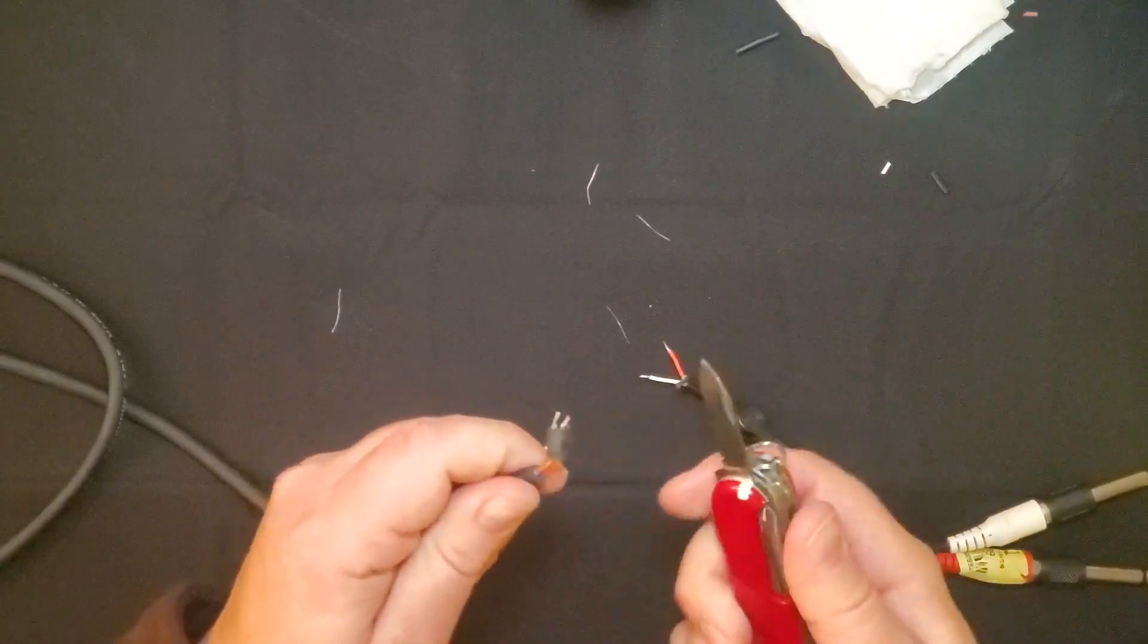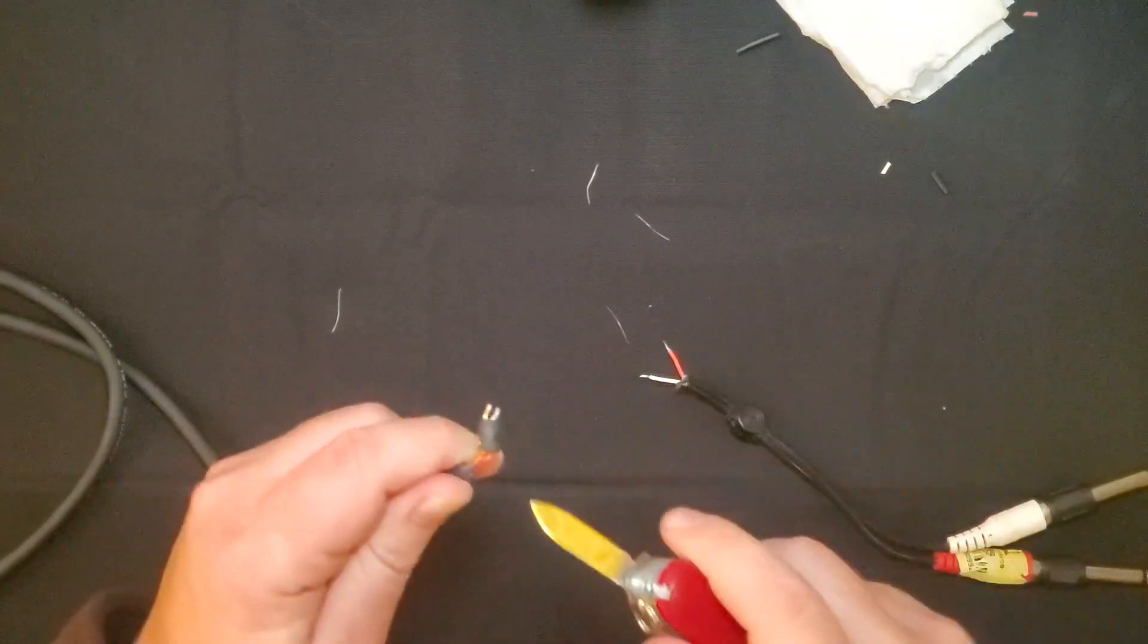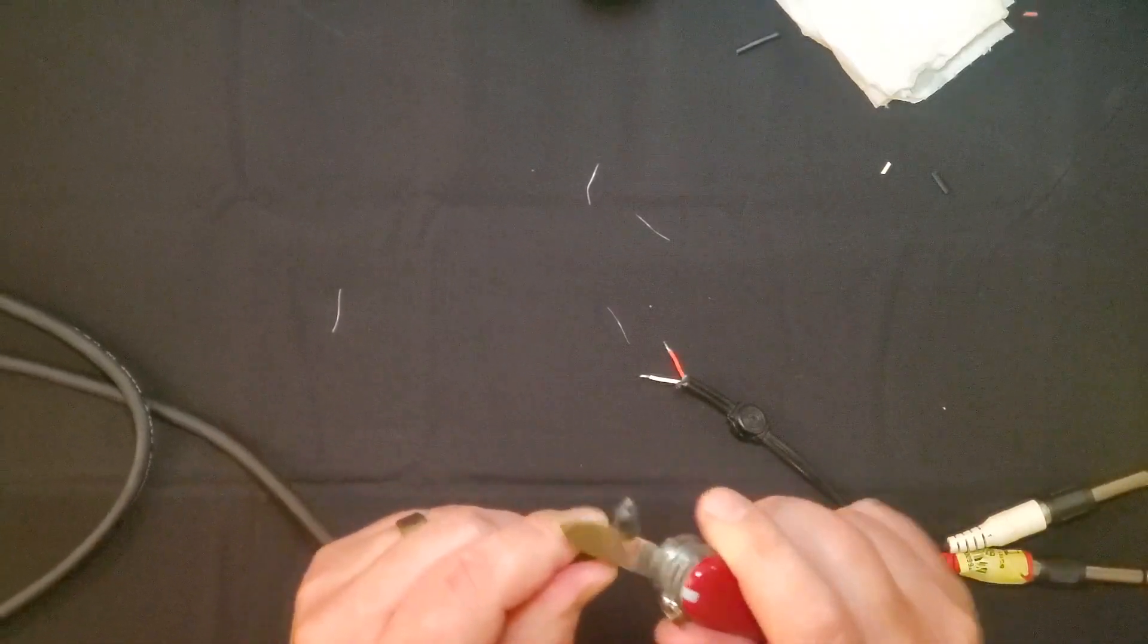This one's being extra stubborn, so I'm just going to use the knife to cut through the sleeve here to remove it from being wrapped around these three inner wires.